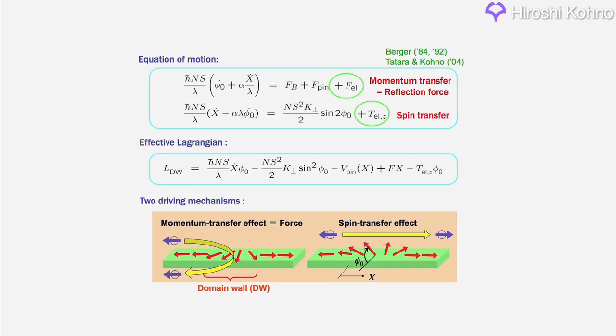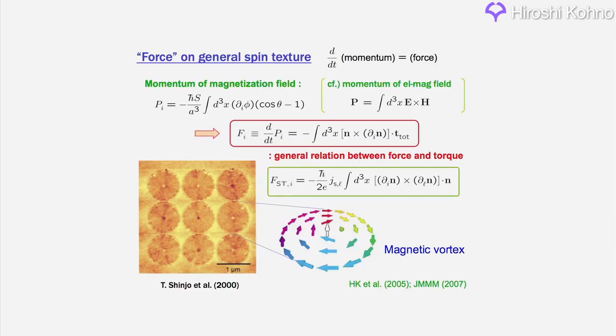These two mechanisms are spin transfer and momentum transfer. Professor Kono devised a theory of these mechanisms from the microscopic viewpoint. He also generalized this theory to situations other than domain walls.